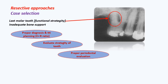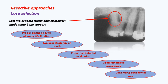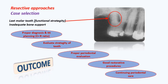Regarding bone support: when doing a resective approach, the remaining roots must have excellent bone support and crown-root ratio. Proper periodontal evaluation is required. The bone quality must be good, and the tooth must be properly restorable. There should always be continuing periodontal care, as all of this will affect the outcome of treatment planning.